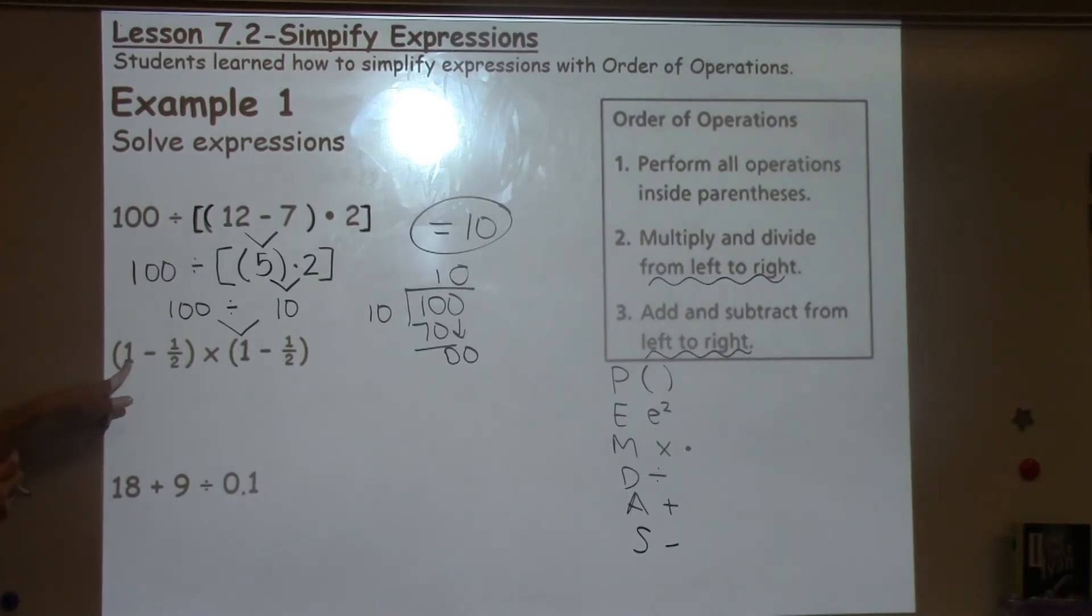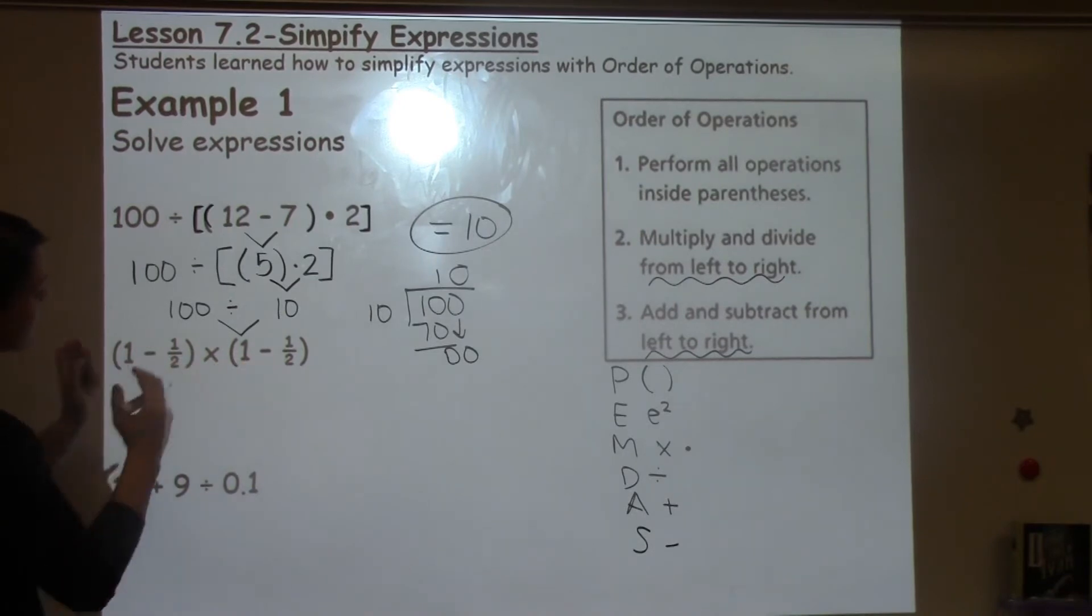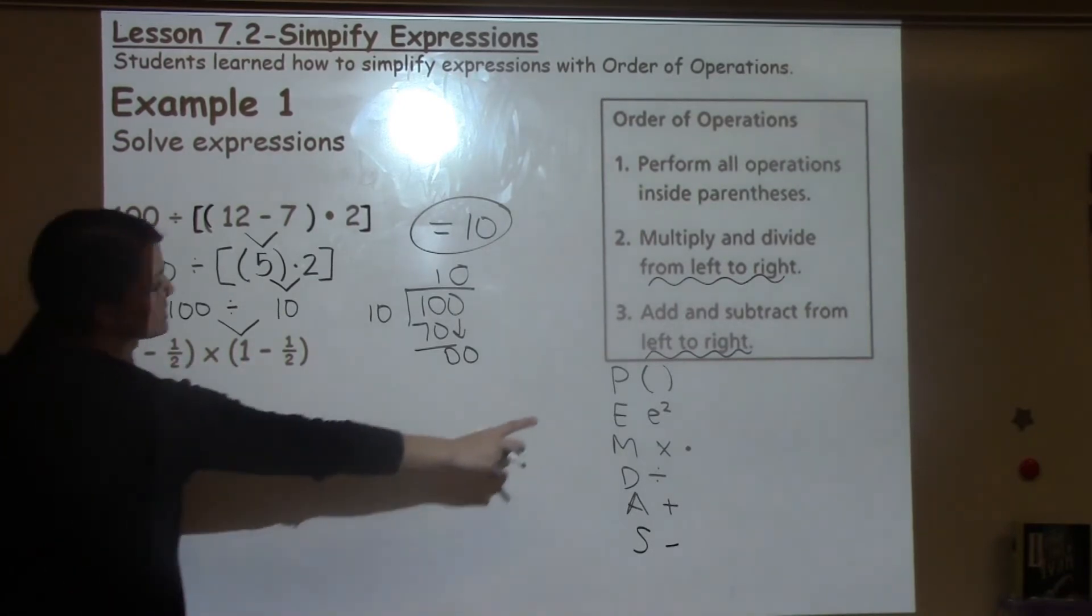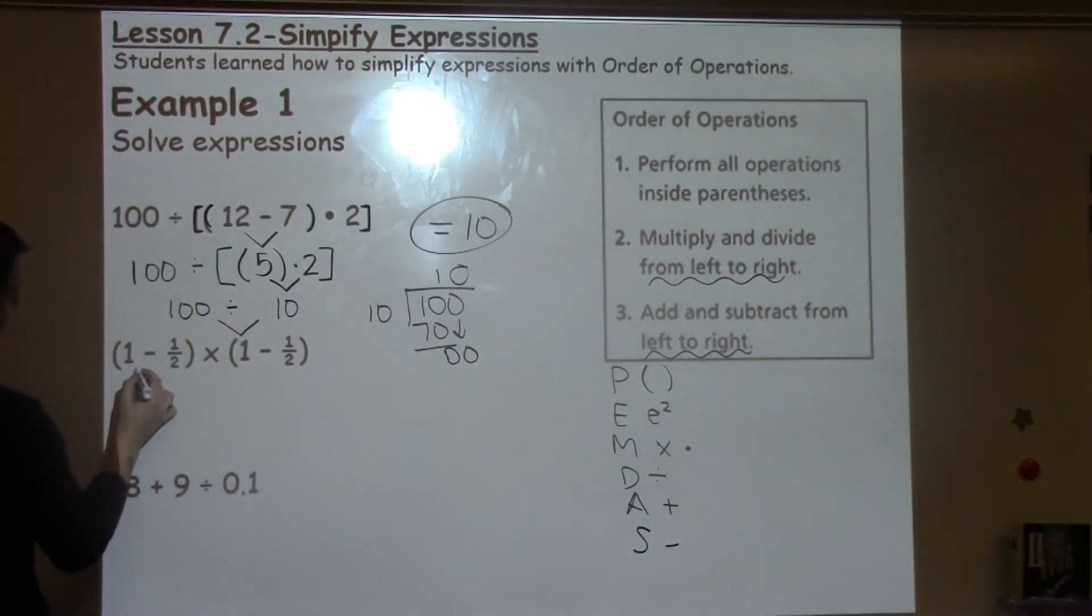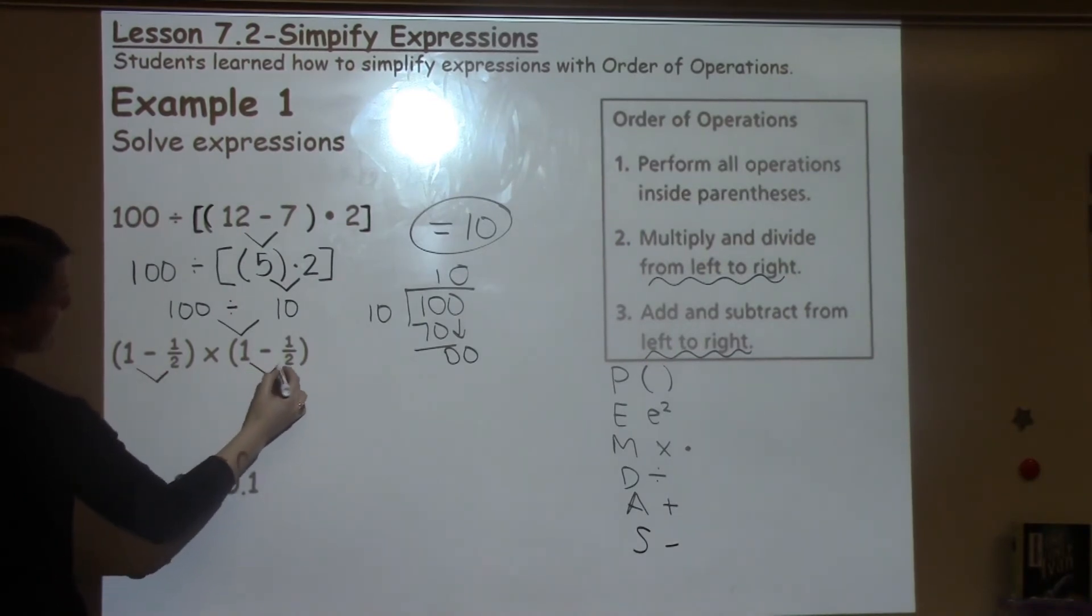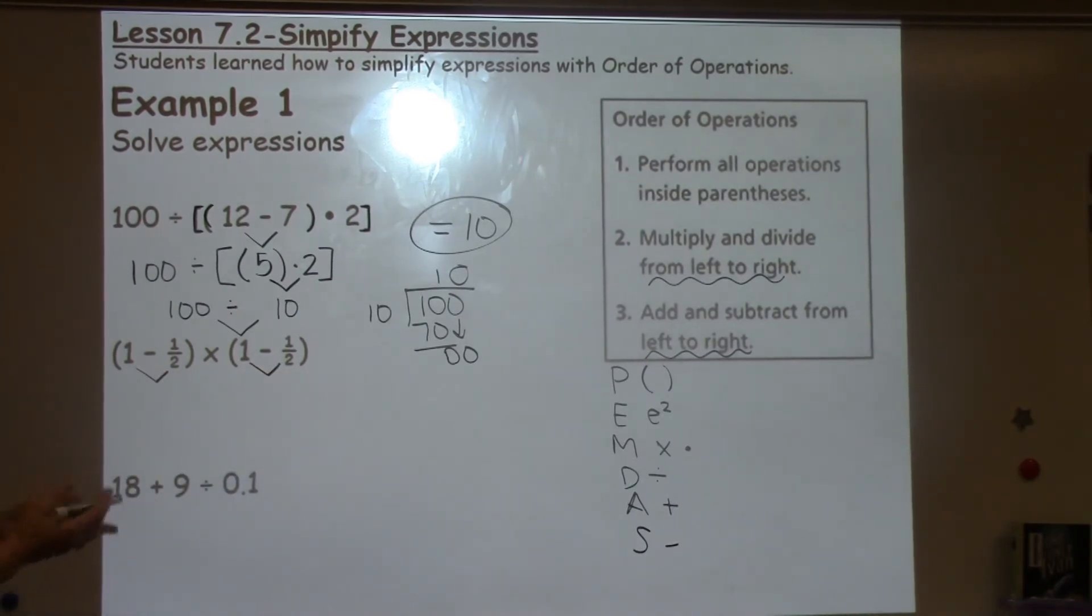Alright, let's take a look at example 2. It says 1 minus 1 half times 1 minus 1 half and those are both in parentheses. So the first thing I need to do is solve what's in parentheses. I've got two of those and I could go ahead and simultaneously solve those and record them down.